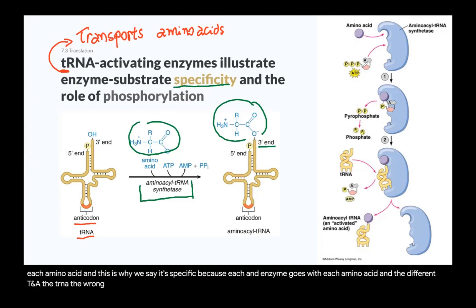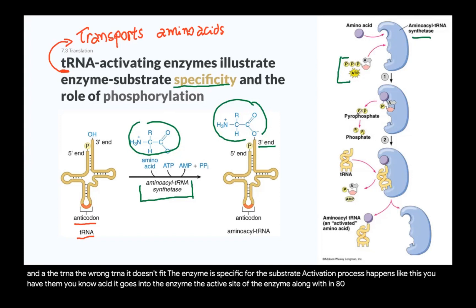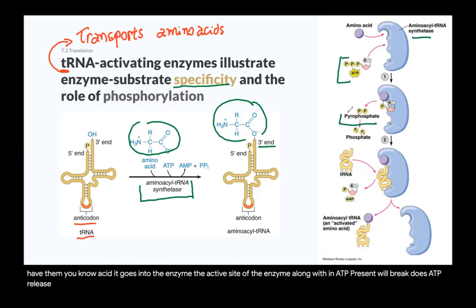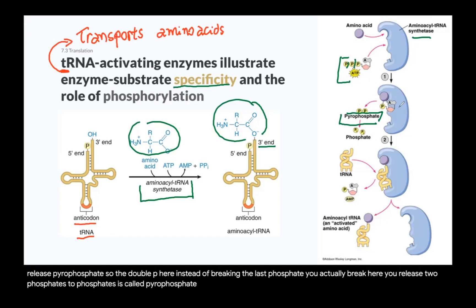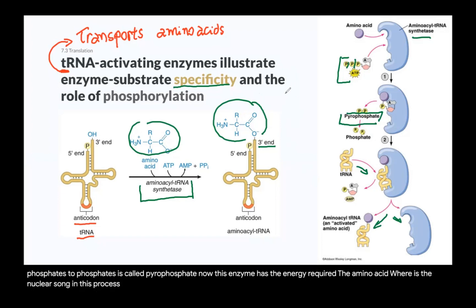The enzyme can't know unless you have many enzymes, each enzyme for each amino acid. And this is why we say it's specific, because each enzyme goes with each amino acid and the different tRNA. The tRNA, the wrong tRNA doesn't fit, so the enzyme is specific for the substrate. The activation process happens like this. You have the amino acid, it goes into the enzyme, the active site of the enzyme, along with an ATP. The enzyme will break this ATP, release pyrophosphate, so the double P here. Instead of breaking the last phosphate, you actually break here, you release two phosphates. Two phosphates is called pyrophosphate. Now this enzyme has the energy required to transfer the amino acid to the tRNA, so the tRNA comes here, receives the amino acid, and everyone is happy. Now my question is, where is the nucleosome in this process? Well, the nucleosome is not here, it's not part of the process. So we can eliminate this from our question. This is not part, this is not a role of the nucleosome.